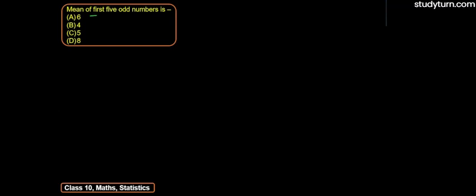Our problem states the first 5 odd numbers. First we will write the first 5 odd numbers, which are 1, 3, 5, 7, and 9.